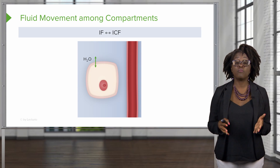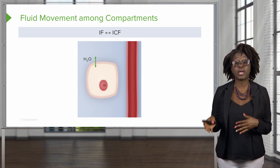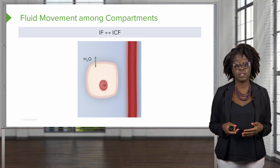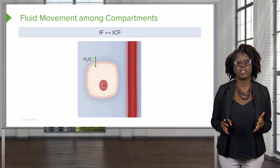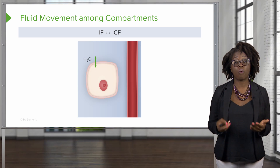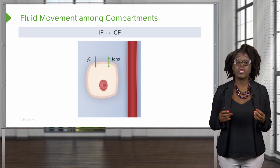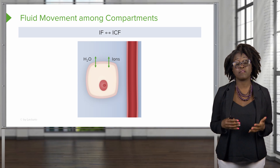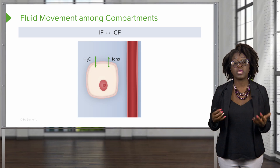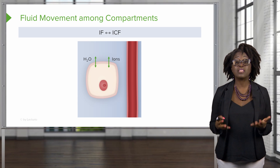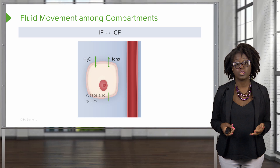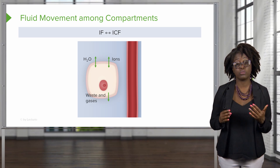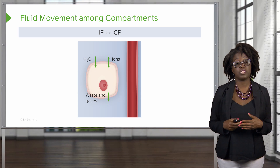Fluids that move from the interstitial fluid to the intracellular fluid move back and forth across the cell membrane. The cell membrane involves two-way osmotic flow of water. Ions move more selectively into and out of cells by way of different carrier or transport proteins found in the cellular membranes. Nutrients, wastes, and gases usually have a unidirectional flow out of the cell.